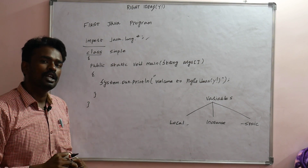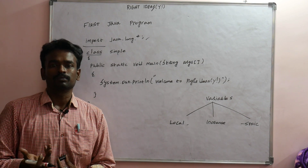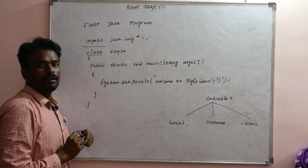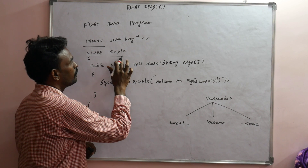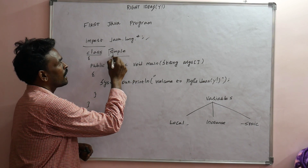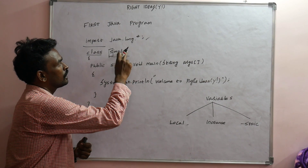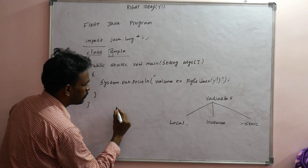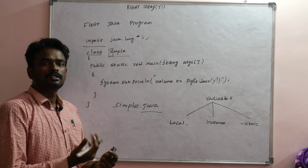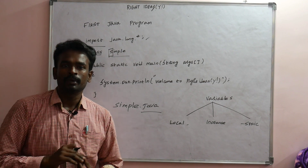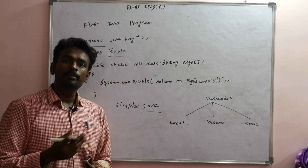When you create an object, you can access the main function. Java has a starting entry point. When you save the program, you must save it with the same name as the class. The first letter of the class name should be capitalized. For example, save the file as Simple.java, matching the class name exactly.